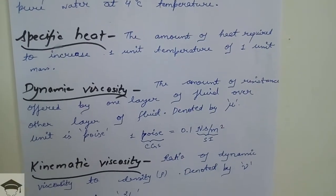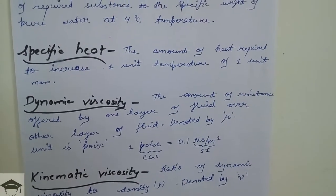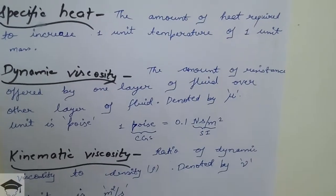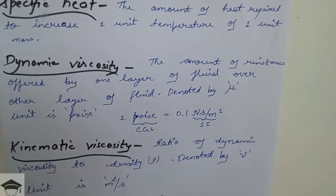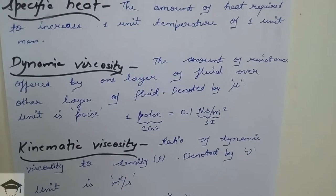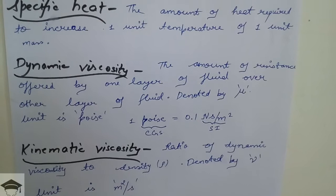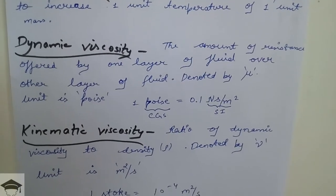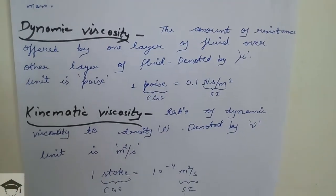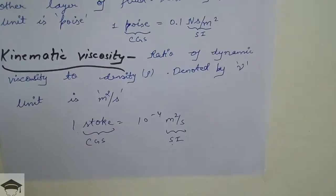Dynamic viscosity: the amount of resistance offered by one layer of fluid over the other layer of fluid. It is denoted by mu. The SI unit is Newton-second per meter square, the CGS unit is poise, and the relation is that one poise equals 0.1 Newton-second per meter square.